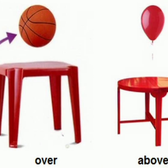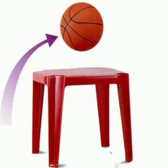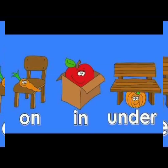There is a ball over the table and there is a balloon over the table. Over means upside. There is a carrot on the chair. There is an apple in the box. And there is a pumpkin under the chair.